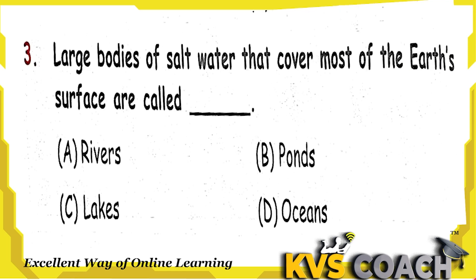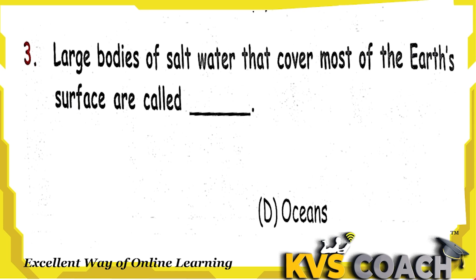Next question: large bodies of salt water that cover most of the earth's surface are called? Option A, River? No. Option B, Ponds? No — these are small water bodies. Option C, Lakes? No — also small water bodies. Option D, Ocean? Yes. Ocean is the largest water body on the earth, and our earth is covered by water or oceans almost 70 percent. So the right answer is option D, Oceans.